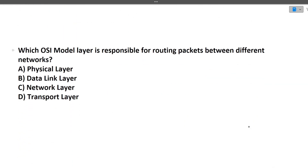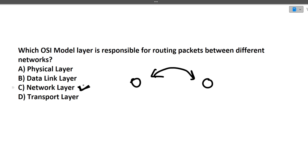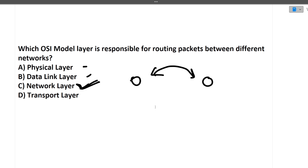Next question: which OSI model layer is responsible for routing packets between different networks? The answer is the network layer. Routing of packets from one router to another happens at this layer. You can use hit and trial for this — you should know the use case of each network layer.